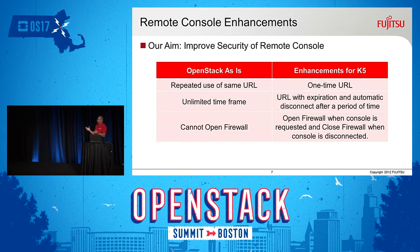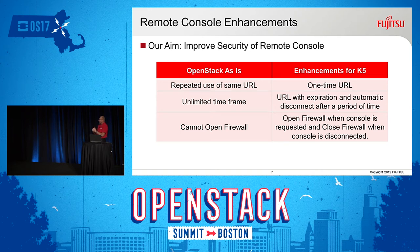The remote console improvements really improved security. OpenStack as-is had repeated use of the same URL with an unlimited time frame and you couldn't open a firewall easily. With our K5, we created a one-time URL. When you open up that remote console, you get that URL, it has an expiration, and after a period of time it will automatically disconnect for security purposes. You can open the firewall when the console is requested and close the firewall when it's disconnected. Our aim was to increase enterprise security for those mission-critical workloads our customers have.